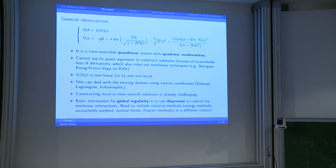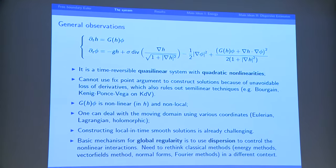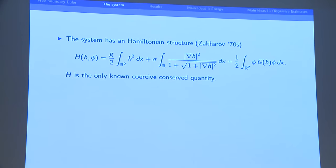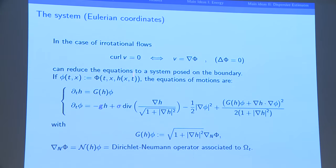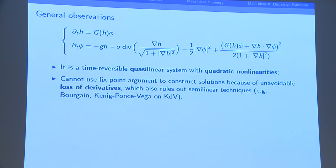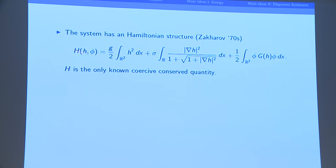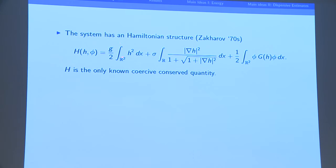Let me make a few basic observations about the system. First, it has a Hamiltonian structure, as pointed out by Zakharov in the 70s. This is usually called the Zakharov — or Craig-Sulem — formulation, in Eulerian coordinates (x, h, phi). Zakharov observed that this has a Hamiltonian structure where the conserved energy is also the Hamiltonian: you have gravity, total mass, surface tension potential energy, and kinetic energy — corresponding to half a derivative of the potential, since the Dirichlet-to-Neumann operator is a self-adjoint first-order operator.